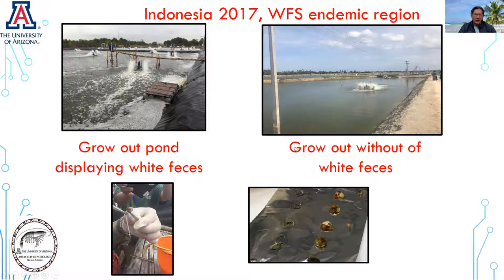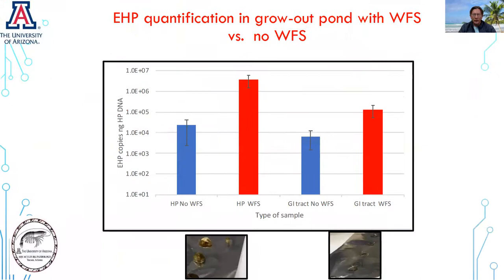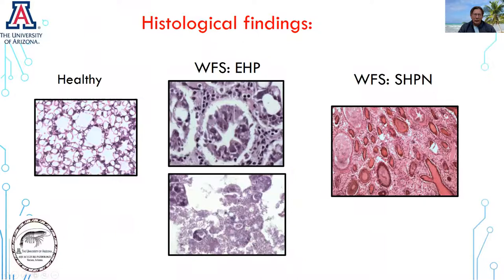Then in 2017, we decided to visit several shrimp farms and do a similar study. We took samples from the hepatopancreas and the GI tract from one pond displaying White Feces Syndrome and another pond without it. We determined the EHP load by quantitative PCR. The EHP load in the hepatopancreas of animals displaying White Feces was significantly higher versus animals that didn't display the whitish discoloration of the GI tract. Significant differences were also found in the intestine. We also found animals displaying septic hepatopancreatic necrosis, as reported the previous year.